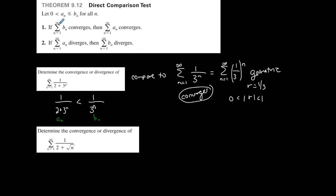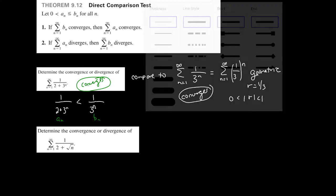Now, what did we say? If the bigger series converges, then the smaller series converges. This is my larger summation. If this converges, then the smaller one converges. You compare two series, compare the nth term of each. This one is larger than this one. If the larger one converges, the smaller one converges.